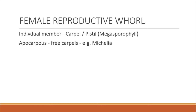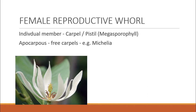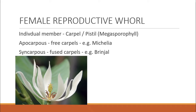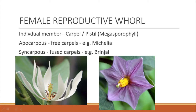There are two types of carpels depending on whether they are free or fused. First is apocarpous — where carpels are free. The classical example is Michelia, where you can see the carpels are not fused. Second is syncarpous — where carpels are fused, as seen in brinjal. If carpels are free, they are called apocarpous; if carpels are fused, they are called syncarpous.